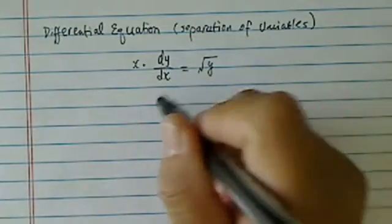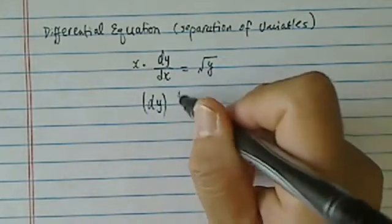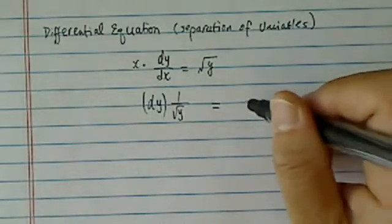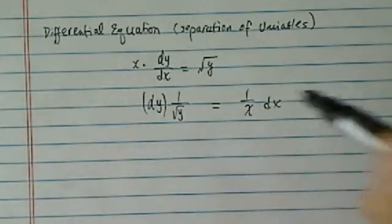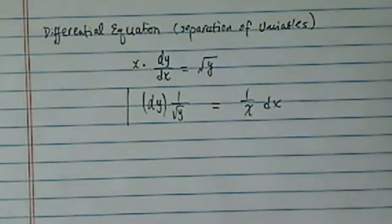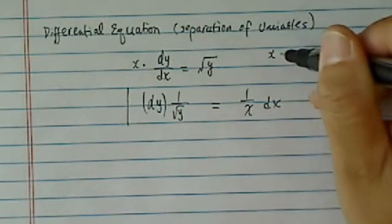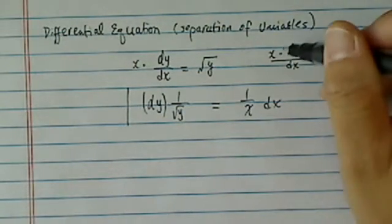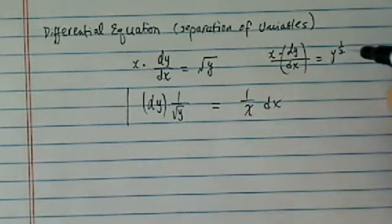What we need to do is gather the dy with the y variable — that is 1 over radical y — on one side, and then on the other side we'll have 1 over x dx. This step is seemingly easy but it's actually a pretty important step, because without it you can't really integrate. So we have dy over here and dx, and technically this should be together — equal to y to the half over one.